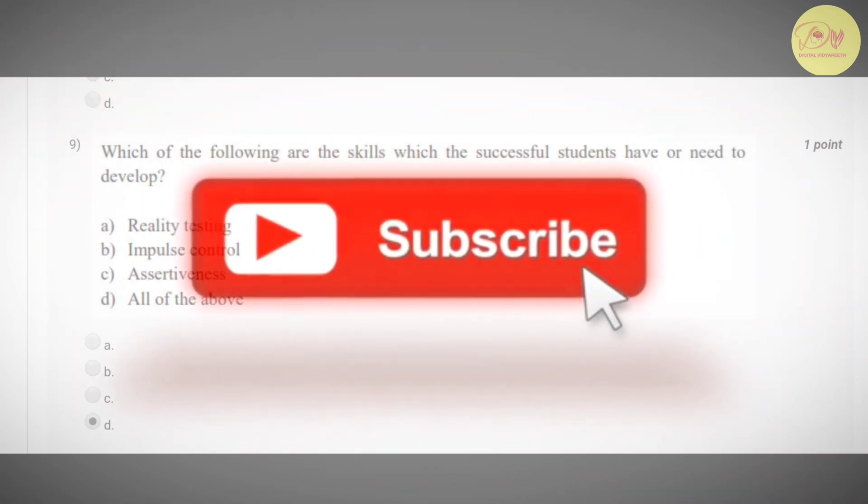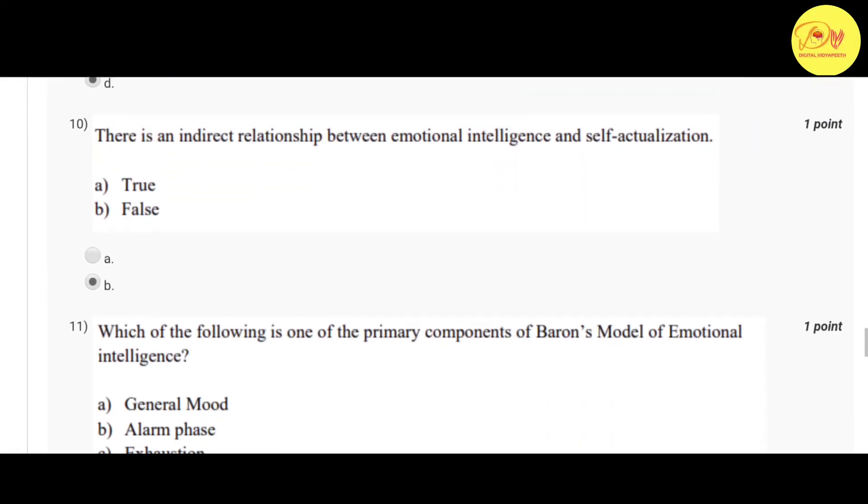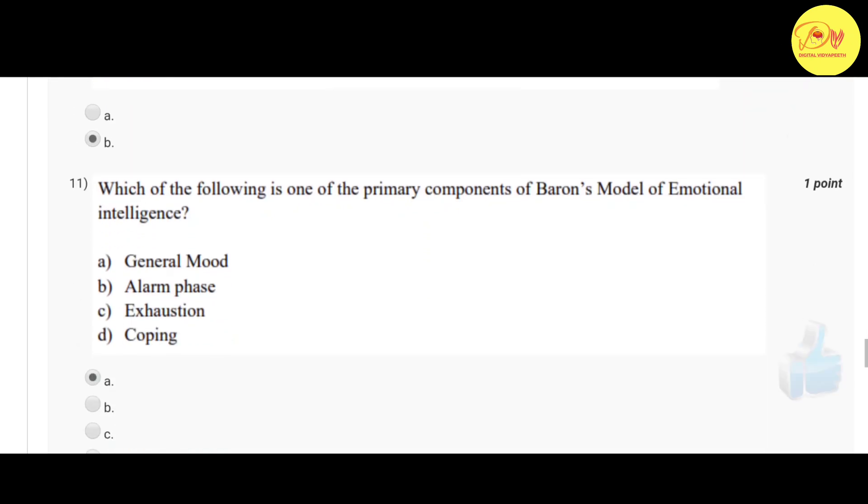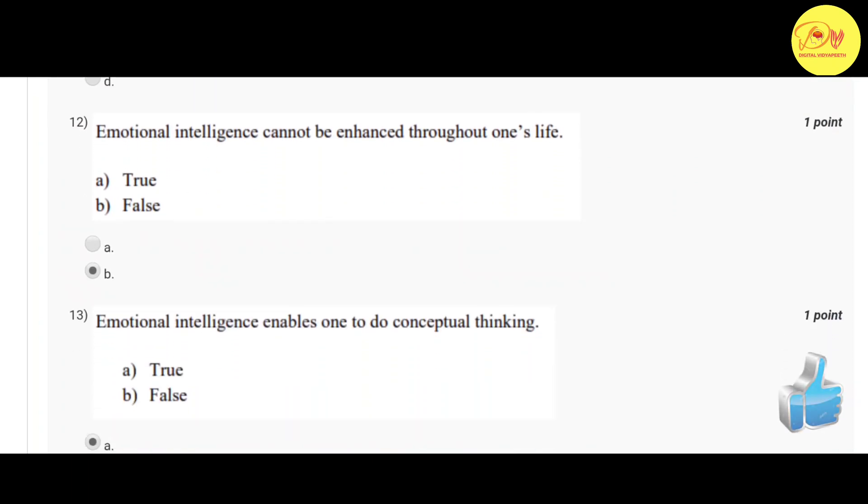Our tenth question is: there is an indirect relationship between emotional intelligence and self-actualization. Correct option is B, false. Our eleventh question is: which of the following is one of the primary components of Baron's model of emotional intelligence? Correct option is A, general mood.